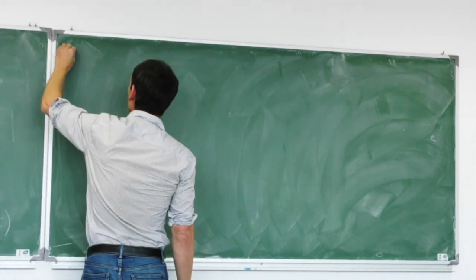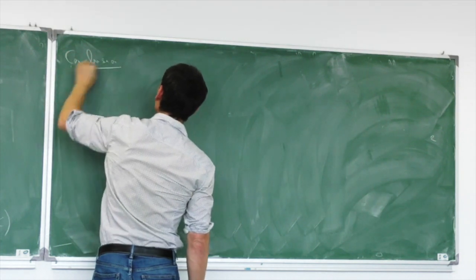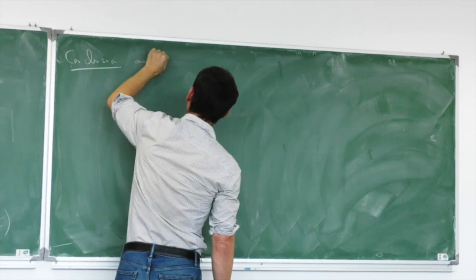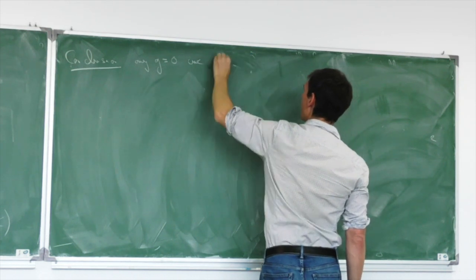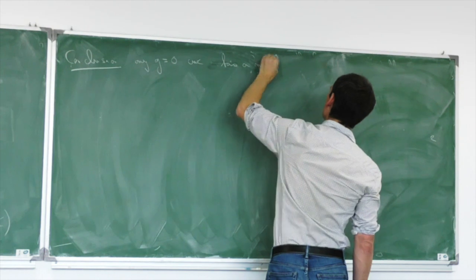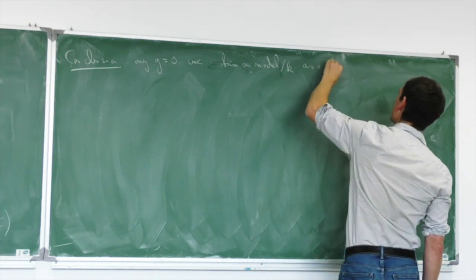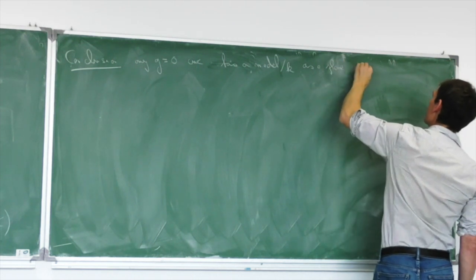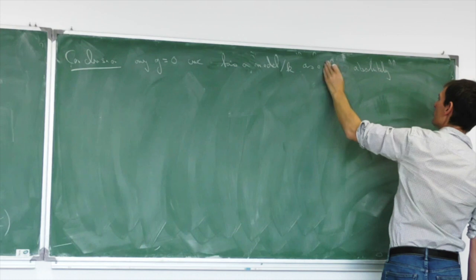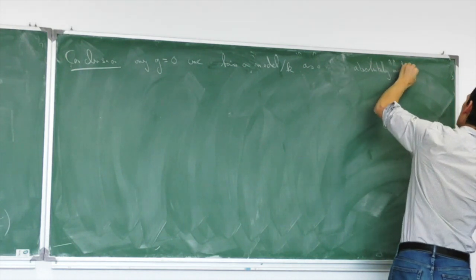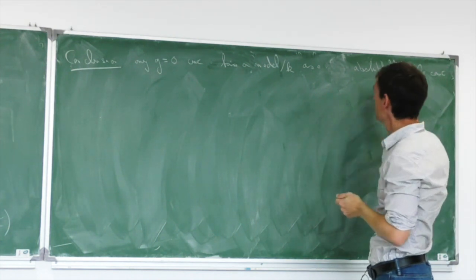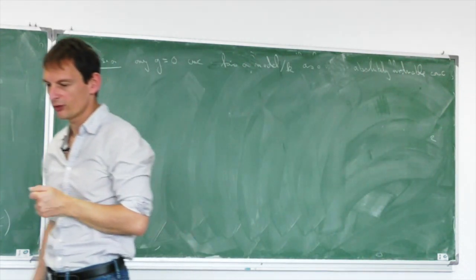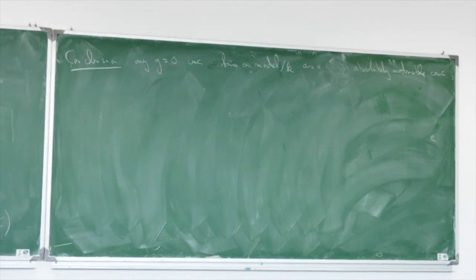If the conic is smooth it has to be absolutely irreducible by Bézout. So any genus zero curve can be represented over k as an absolutely irreducible plane conic. Conversely, any absolutely irreducible conic is a genus zero curve. This settles the case of genus zero.